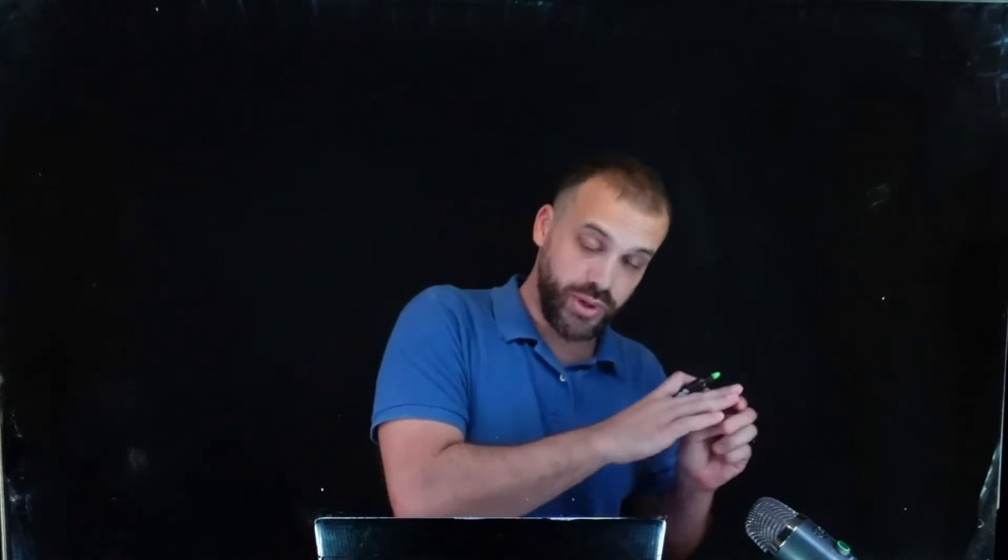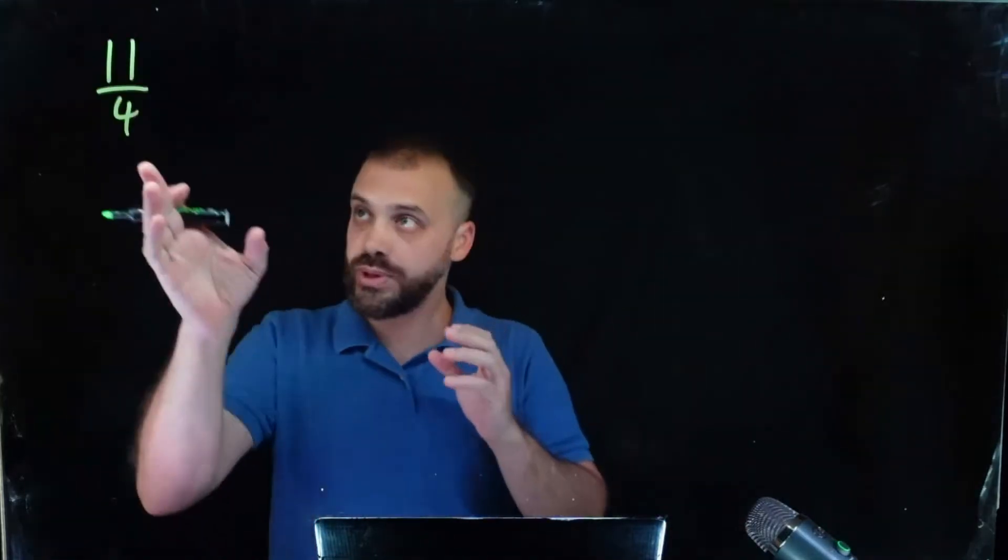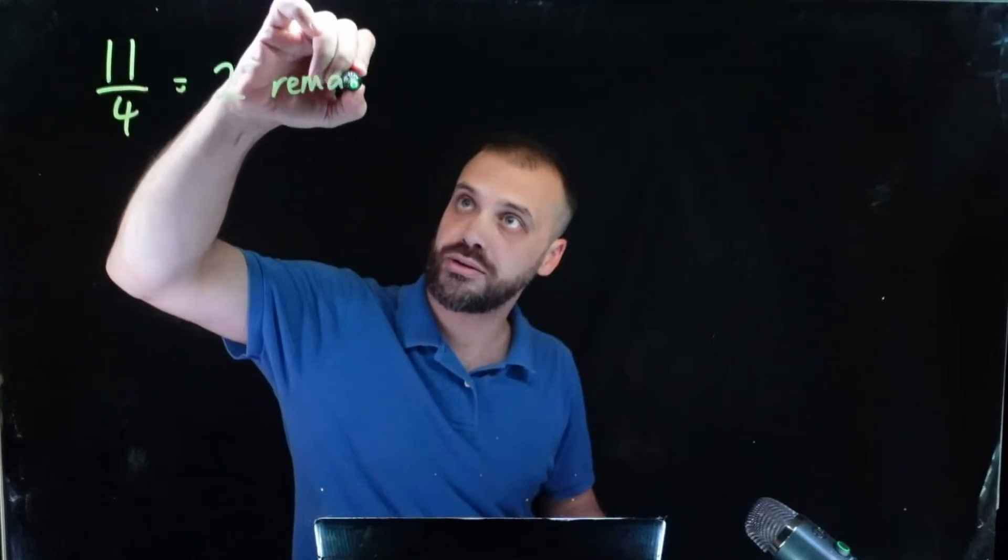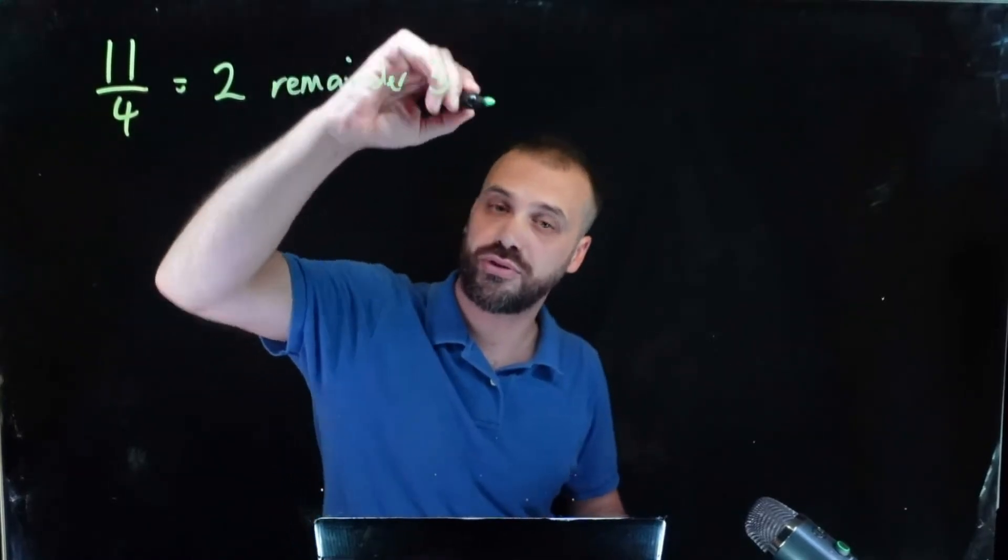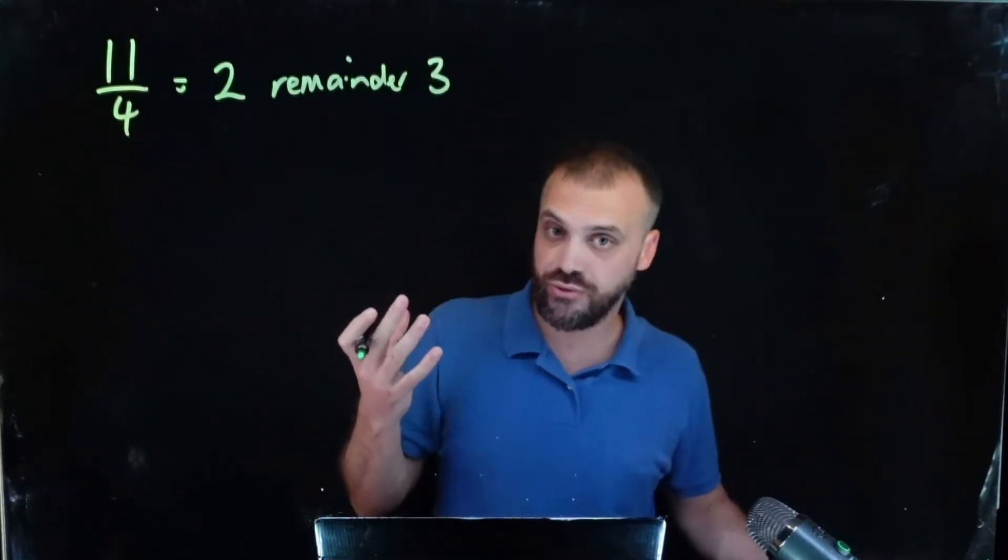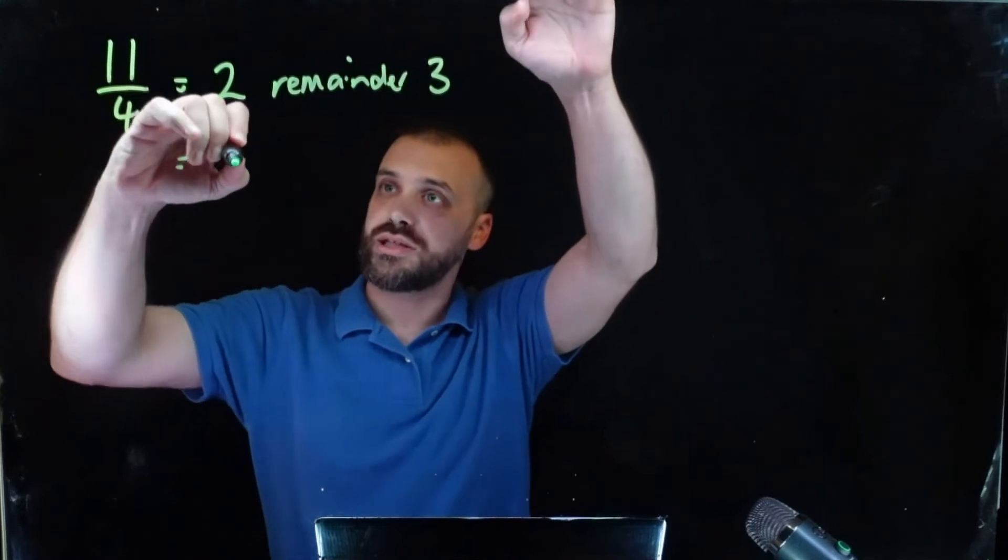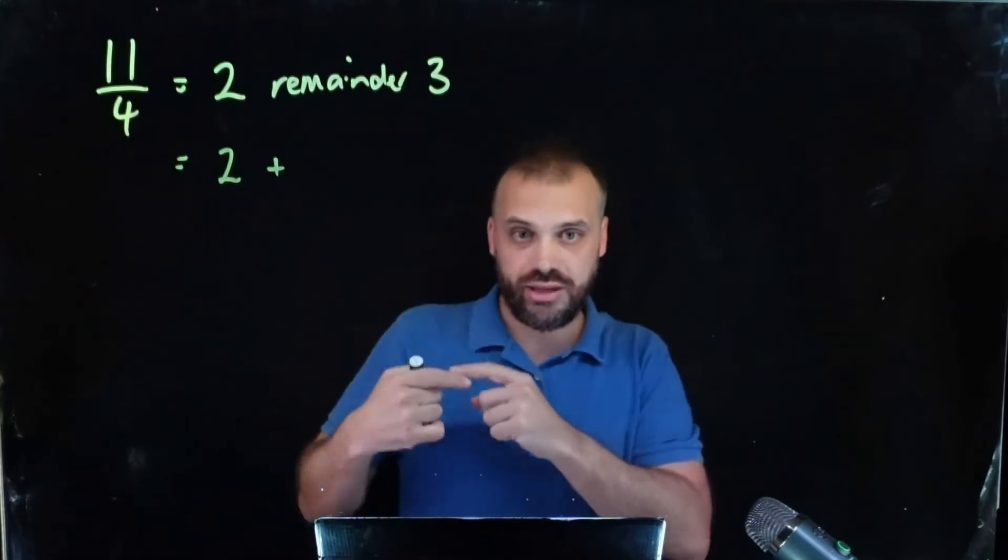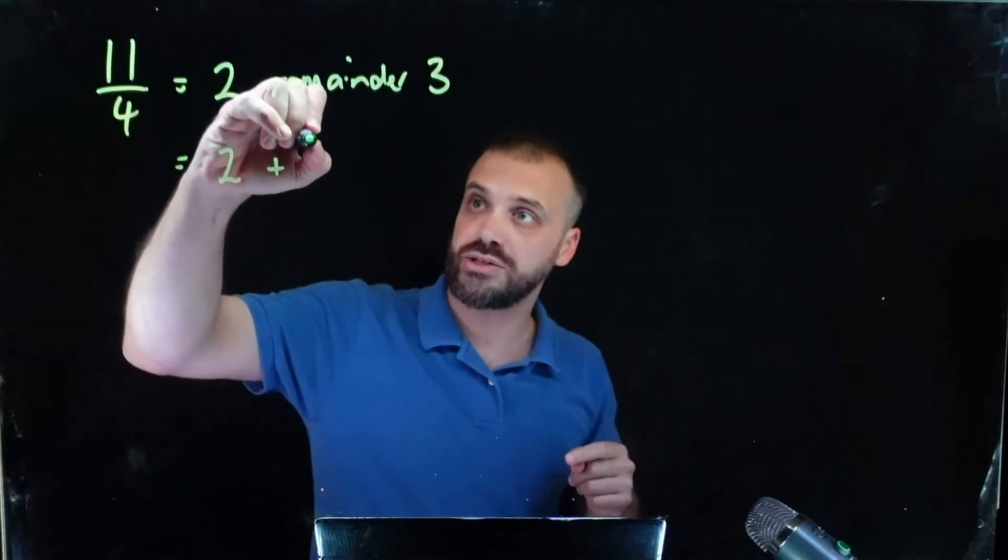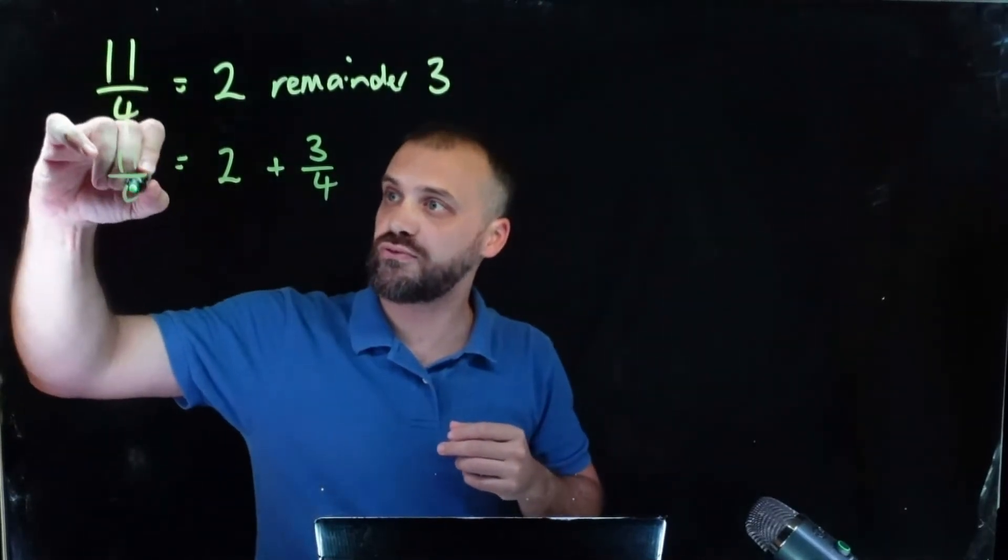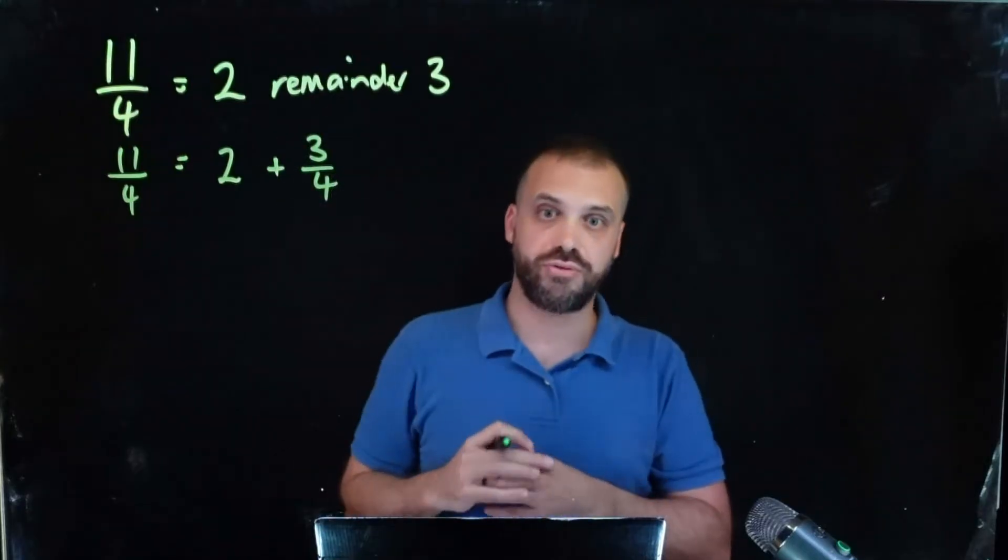First of all, we're going to jump all the way to like primary school math. So we have 11 divided by 4 here and that is equal to 2 with a remainder of 3. Super primary school stuff. Now we can write this a slightly different way. We can say that it's equal to 2 plus, we wanted to divide that 3 but we couldn't, so we just leave it as 2 plus 3 divided by 4. So 11 over 4 is equal to 2 plus 3 over 4.